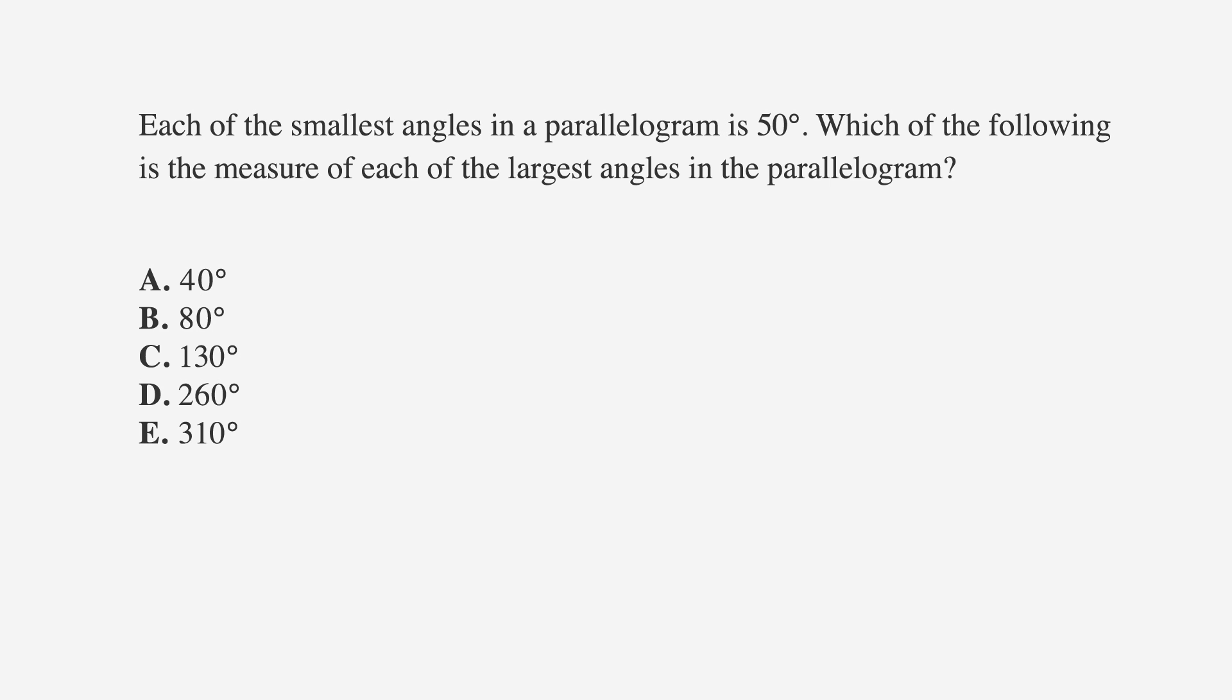Now let's apply this to solve a question you might see on the ACT. Each of the smallest angles in a parallelogram is 50 degrees. Which of the following is the measure of each of the largest angles in the parallelogram? A is 40 degrees, B is 80 degrees, C is 130 degrees, D is 260 degrees, and E is 310 degrees.